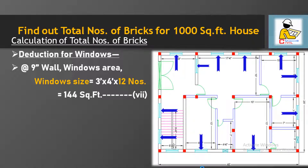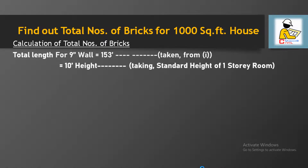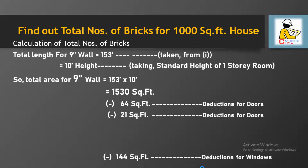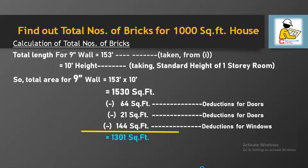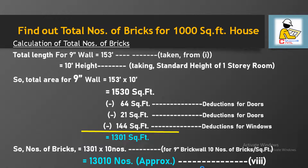We already have the total length of the 9 inch wall as 153 feet. Taking the standard height of a single-storey room as 10 feet, the gross wall area is 1530 square feet. After deducting doors and windows area, we get 1301 square feet. Since 10 bricks are required per square feet for a 9 inch wall, multiplying 1301 by 10 gives approximately 13,010 bricks.